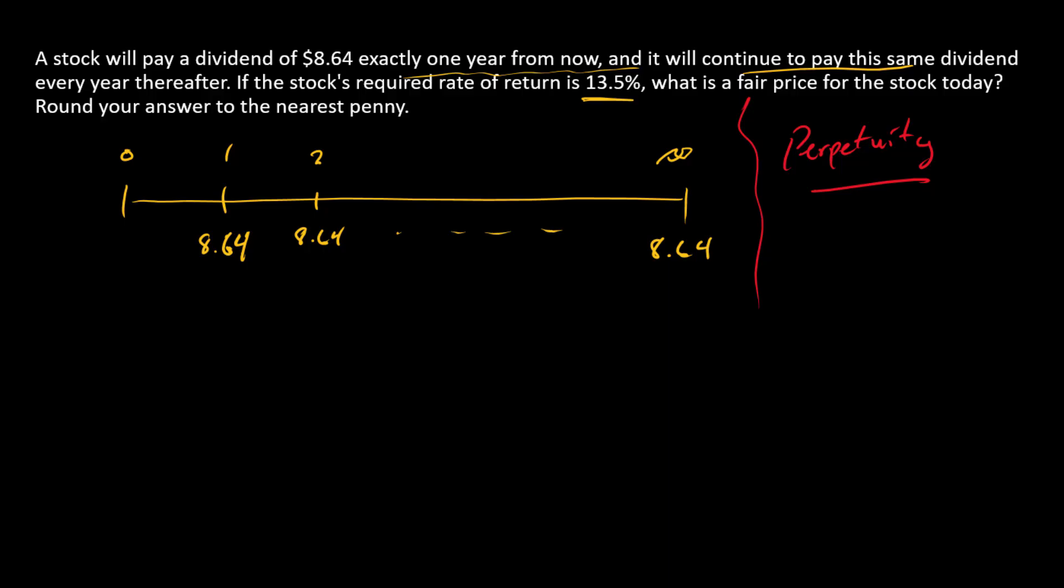Then we can go into our time value of money toolkit and recall that the present value of a perpetuity is the cash flow divided by the discount rate.